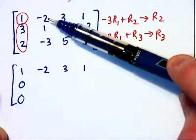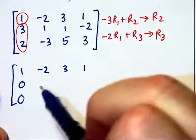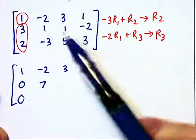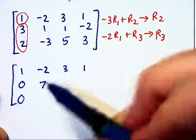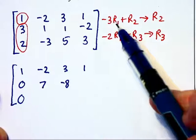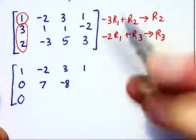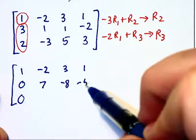Then -3 times -2, that's 6, plus 1 makes 7. And -3 times 3 is -9, plus 1, which makes -8. And -3 times 1 is -3, minus 2 makes -5.